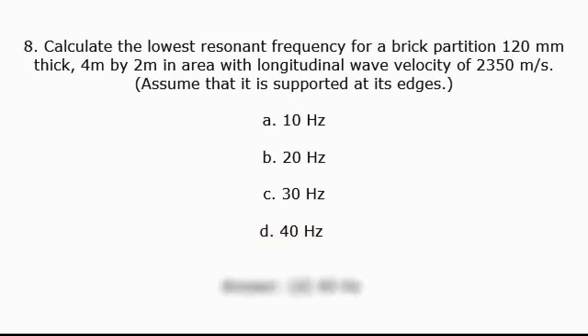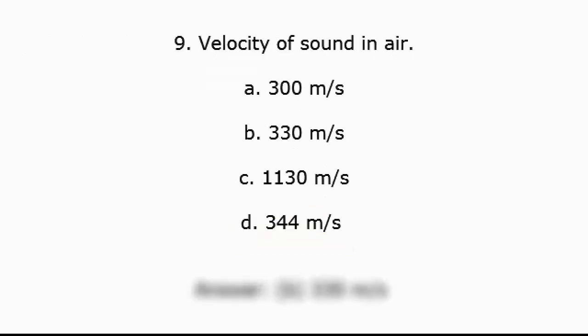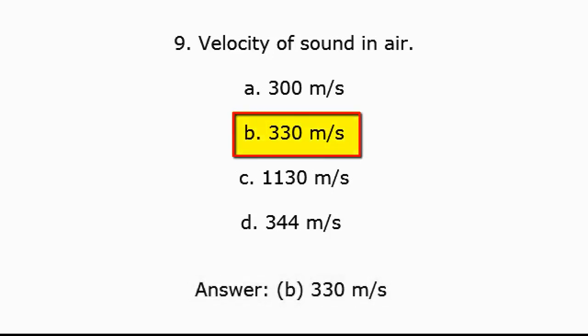Question 9: Velocity of sound in air. A. 300 m/s, B. 330 m/s, C. 1130 m/s, D. 344 m/s. Answer: B. 330 m/s.